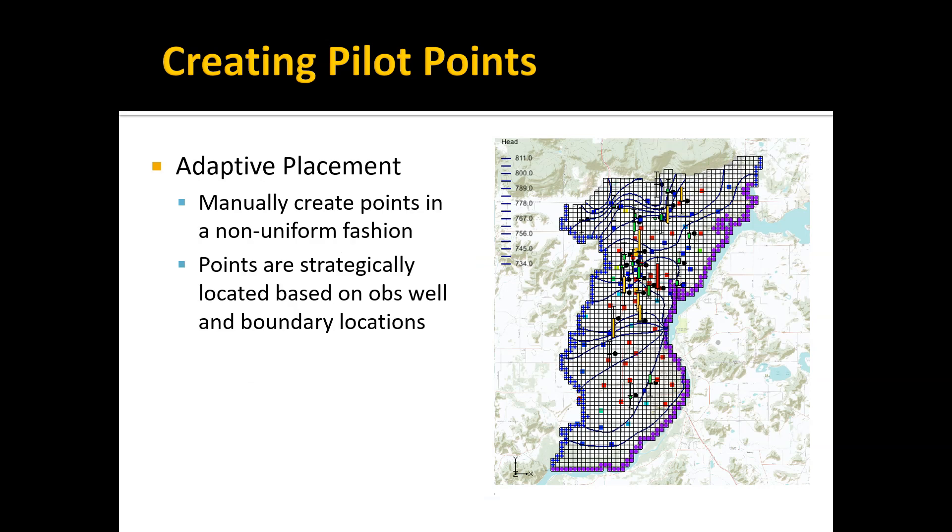There are two ways to create pilot points. One is called adaptive placement, which means you start clicking with a mouse and manually creating pilot points in a non-uniform fashion. This is probably the most common way to do it, and you have to do it in a strategic fashion based on the locations of your observation wells and your boundaries. Another method is to use uniform placement, where we overlay a grid on our model and place pilot points in a grid format. That works pretty well in some cases; in others, you get a better result using the adaptive strategy.